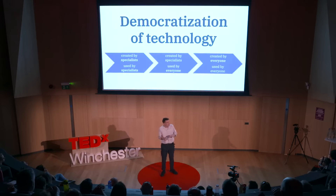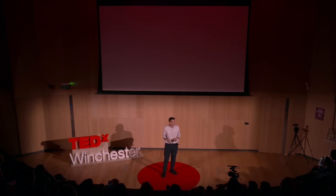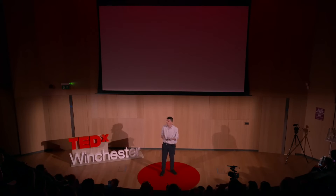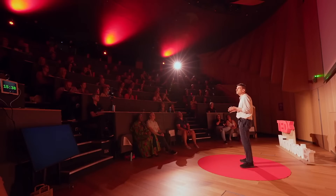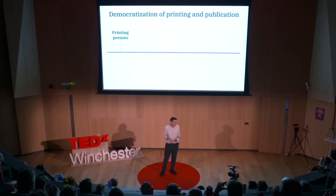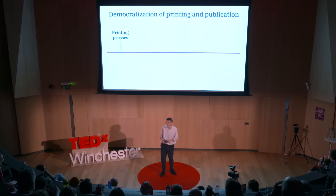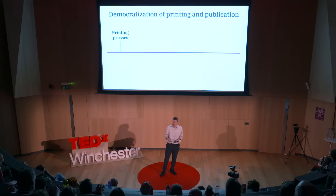Democratization of technology is a term we use in tech to describe how, as technologies evolve, they become accessible to more people. Printing is a good example. In medieval times, creating a book was a manual process — the work of trained experts like monks in monasteries who would craft beautiful handwritten Bibles. Most children weren't taught to read and write, but most children were never going to own a book. But technology evolved. The creation of the printing press in the 15th century led to the mass production of books, and as technology evolved, curriculums evolved with it.